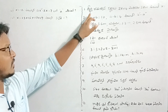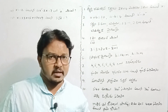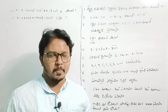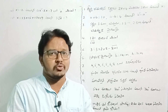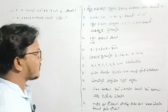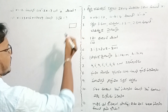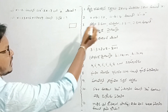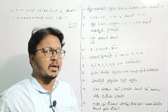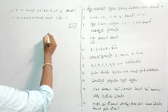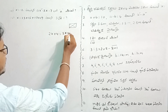The first problem is, if you have any questions, we will talk about it. The second problem is: 2x plus 4 is equal to 3x plus 1.